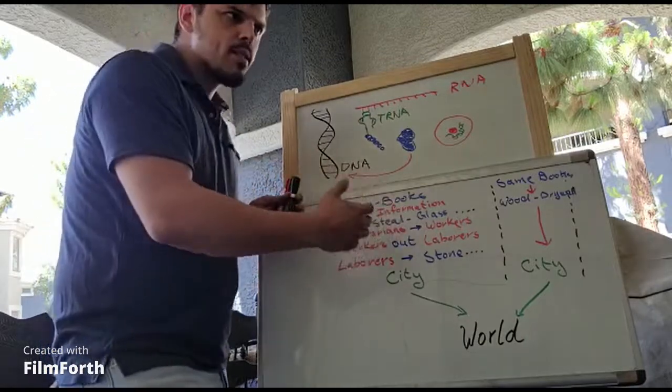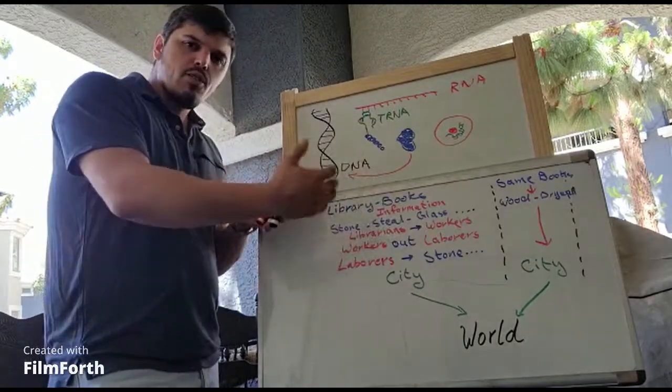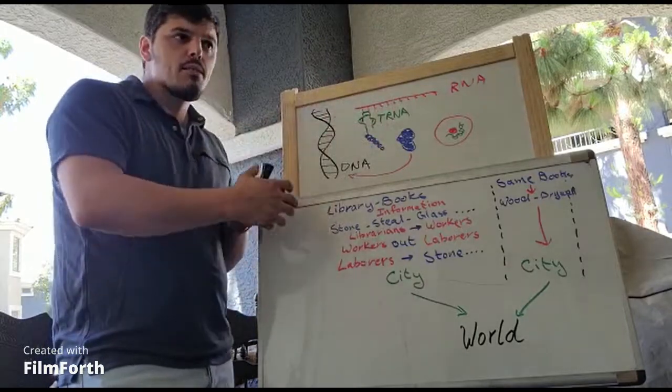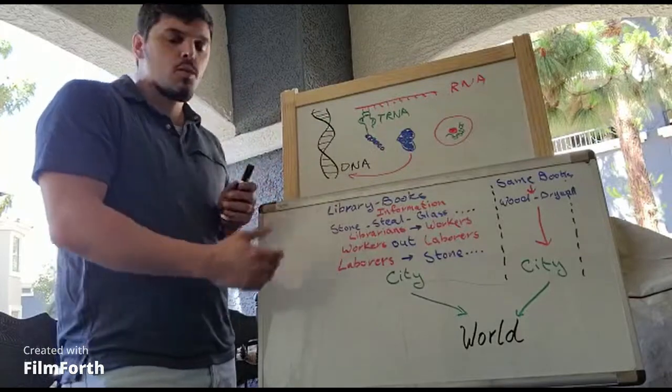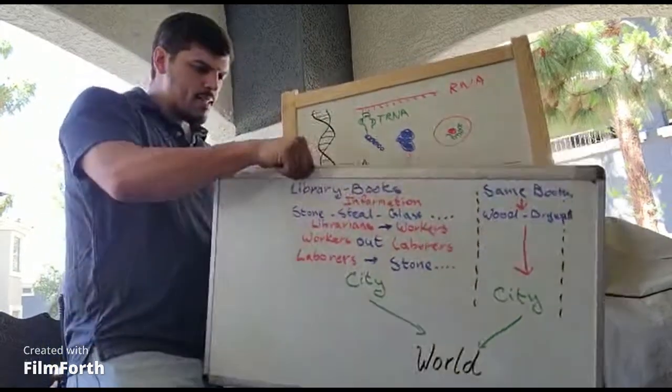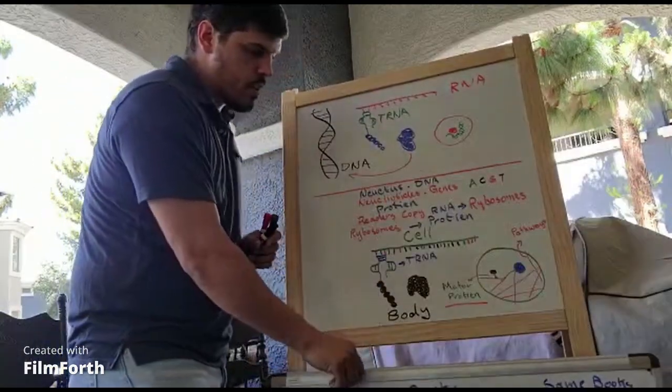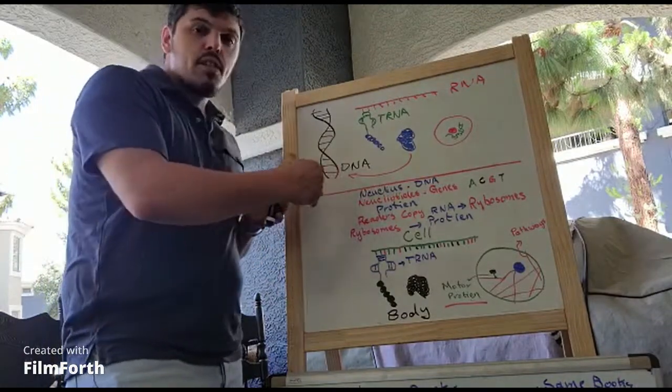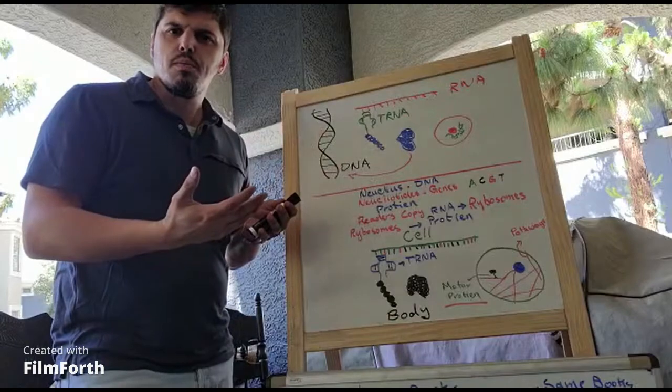What you end up with is one city next to another, next to another, next to another, that eventually create the entire world. So, that's the example we're going to use today. We have those strands of DNA in us, right? The DNA is the information, those books basically.